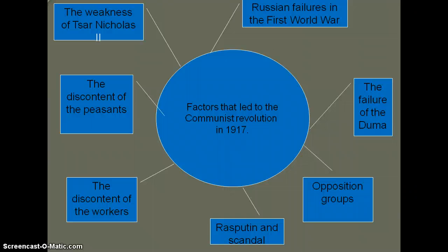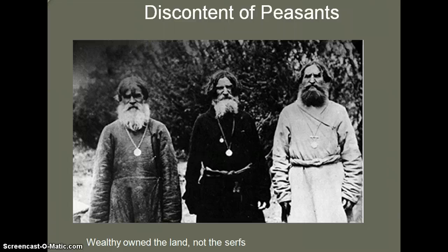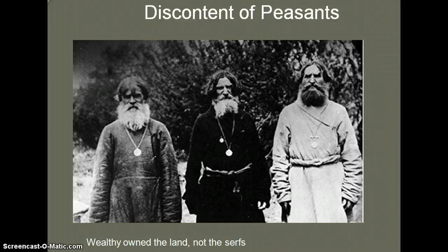The discontent of the peasants is the first problem. Russia was a rural society with over 90% of the people being peasants. Until 1861, the peasants had belonged to their masters, who could buy and sell them like animals. When the serfs were freed in 1861, they were given small amounts of land for which they had to pay back the government. As a result, most farmers were in absolute poverty, and agriculture was in desperate need of modernization.